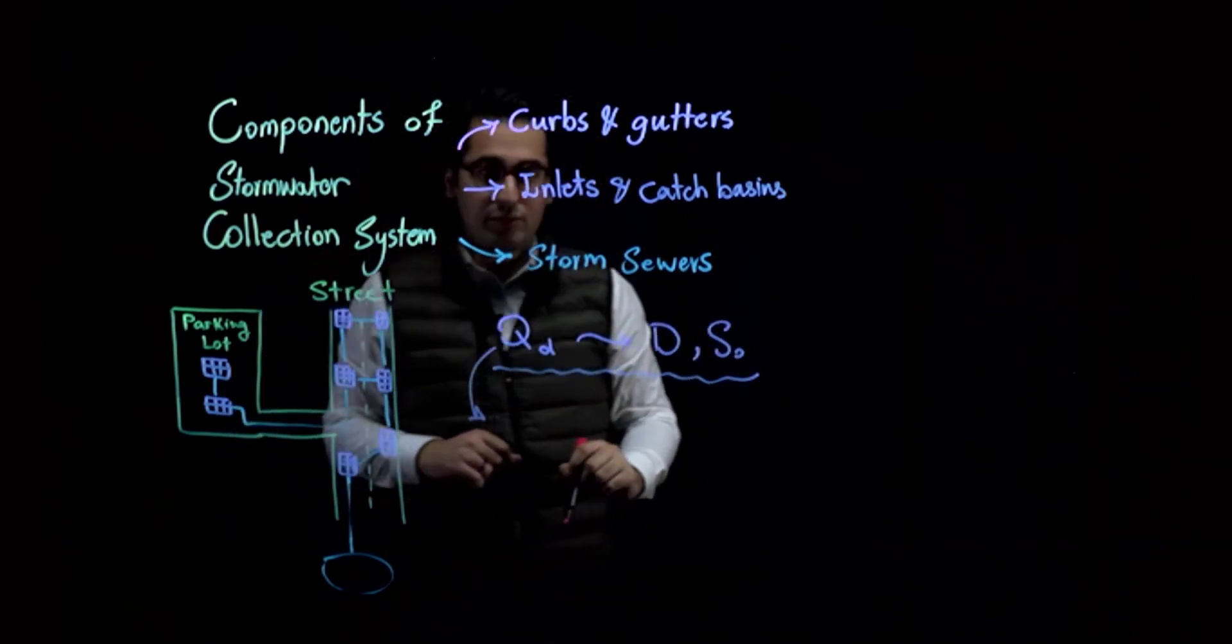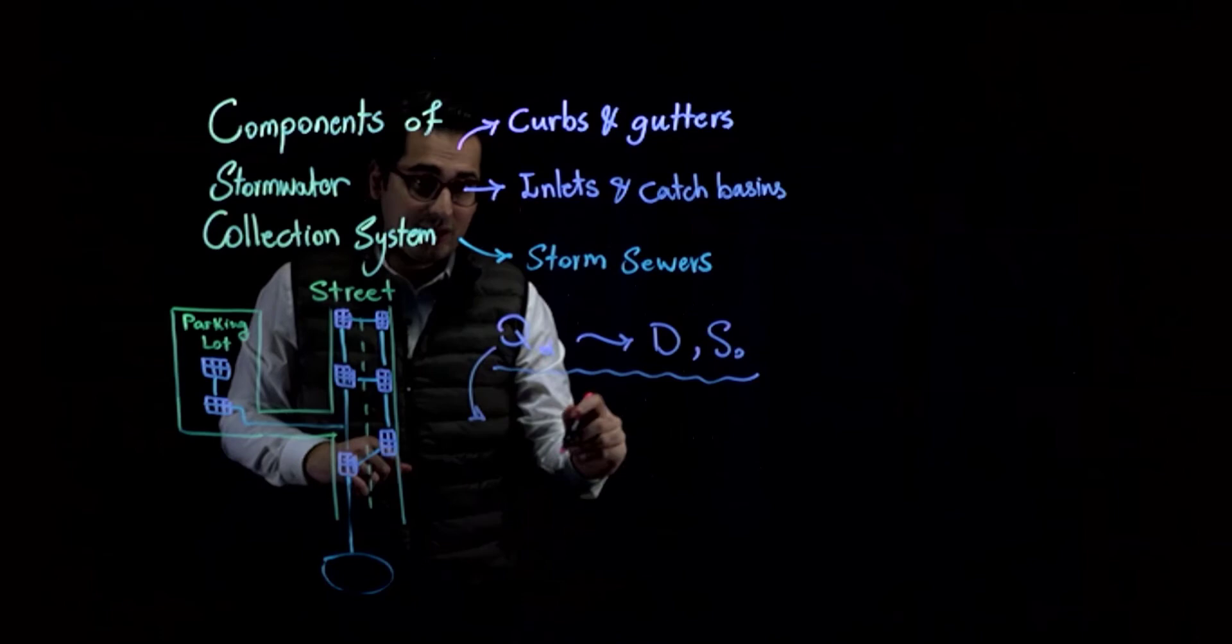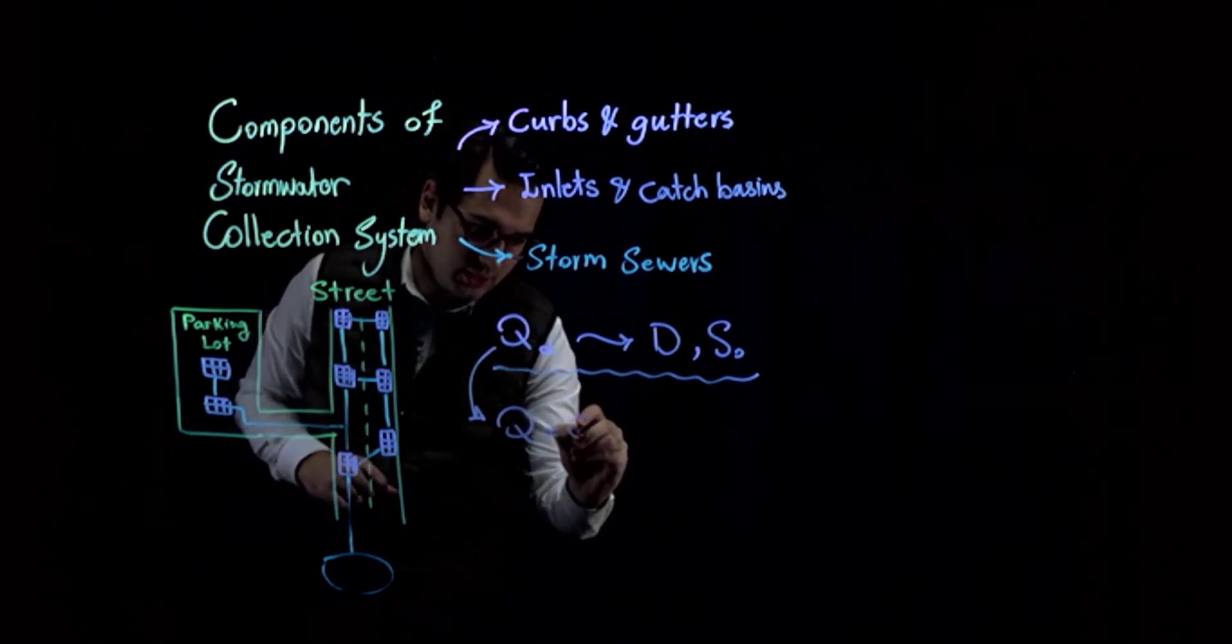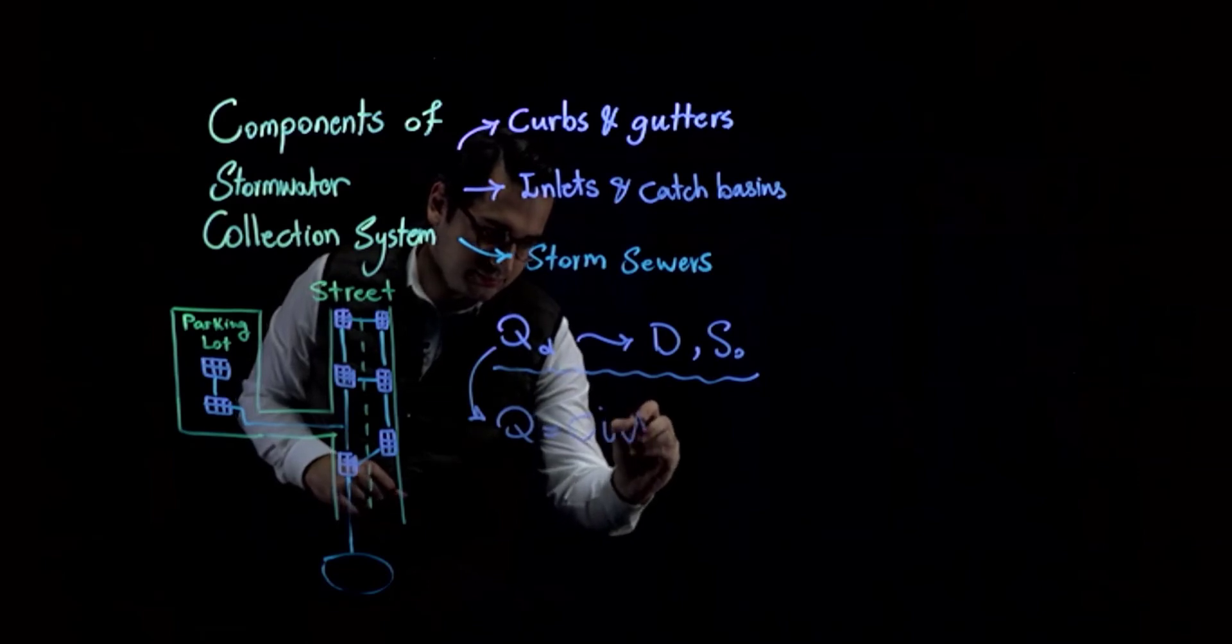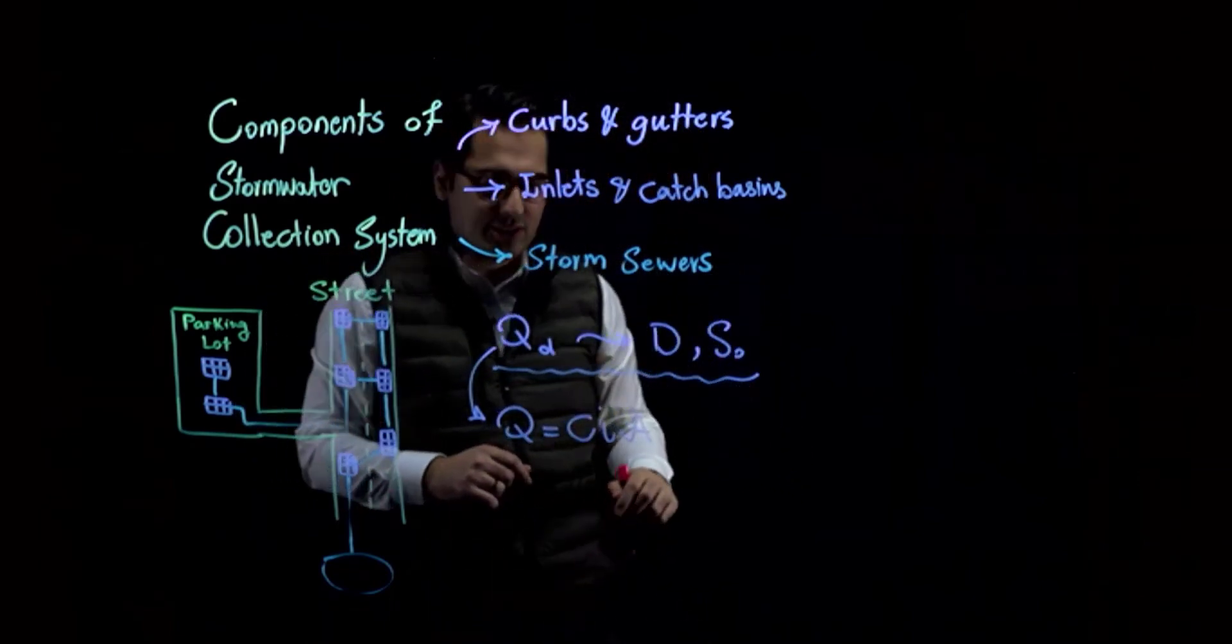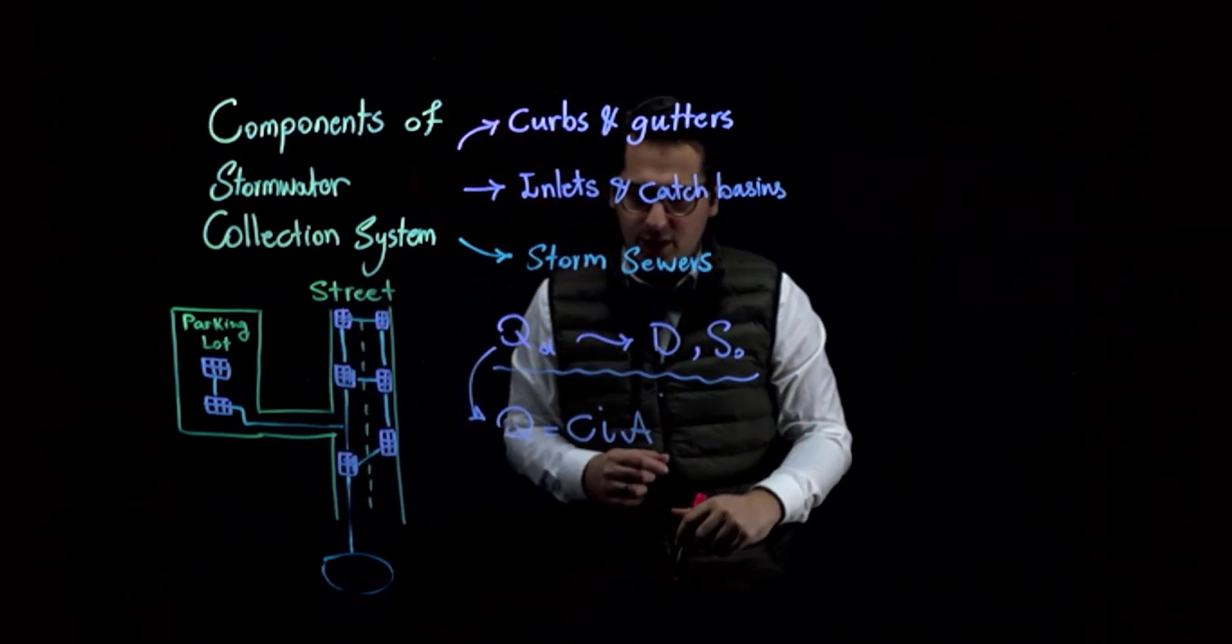Q, or our flow rate, is going to be calculated using the rational method. And the rational method, you all know that it's the CIA method in which C is the runoff coefficient, I is rainfall intensity, and A is the study area.